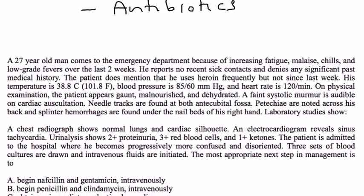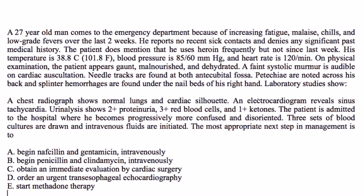A 27-year-old man comes to the emergency department because of increasing fatigue, malaise, chills, and low-grade fevers the last two weeks. No recent sick contacts, denies any significant past medical history. Patient does mention that he uses heroin frequently, but not since last week. His temperature is 101, blood pressure is 85 over 60, heart rate is 120. Physical exam — patient appears gaunt, malnourished, and dehydrated. A faint systolic murmur is audible. Needle tracks are found on both arms. Petechiae are noted across the back and splinter hemorrhages are found under the nail beds.